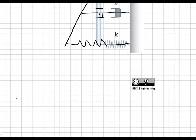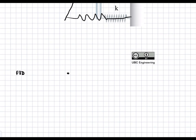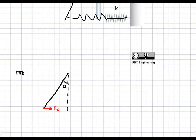So first we displace and draw our free body diagram. This is initially valid for all angles, but then we're going to add a small angle approximation, which limits our solution to small angles. We displace the bar by angle theta. Drawing forces in red for clarity: at the bottom we have the spring force Fk opposing the displacement, the damper force Fc also pulling back, the gravitational force Fg, and reaction forces Ay and Ax.